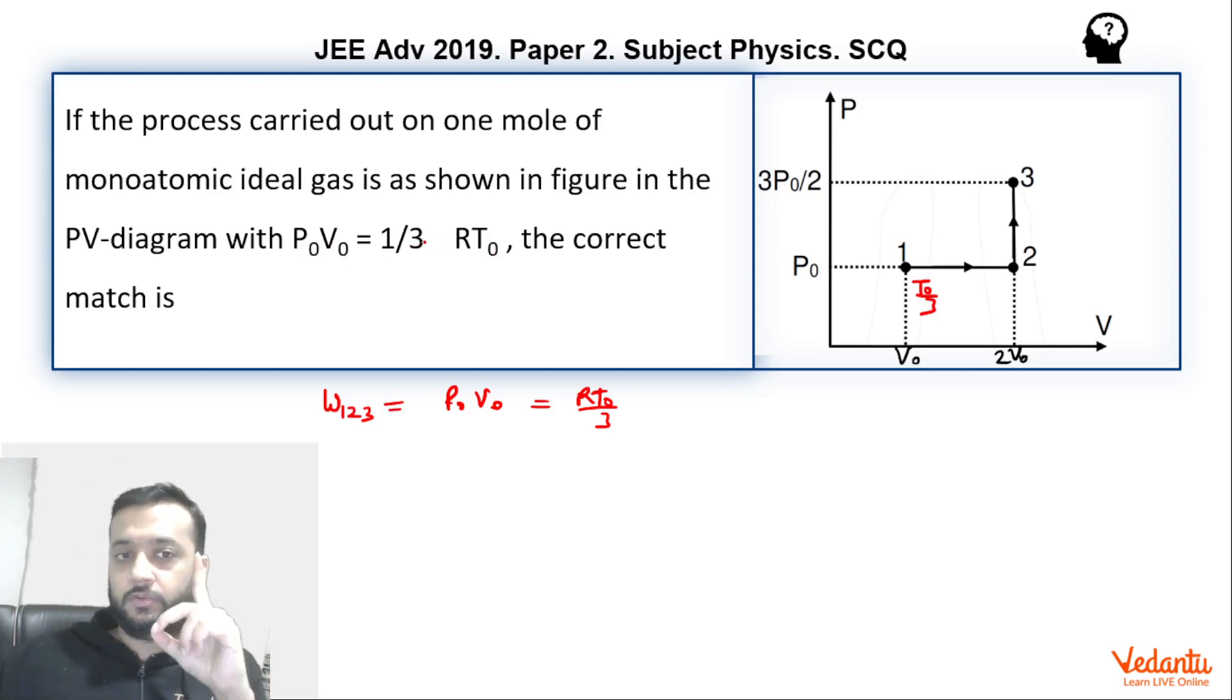This is not moles. Moles is 1. So this 3 actually will be below the temperature. Remember. n R T0, n is 1, R is R, so T will be T0 by 3.